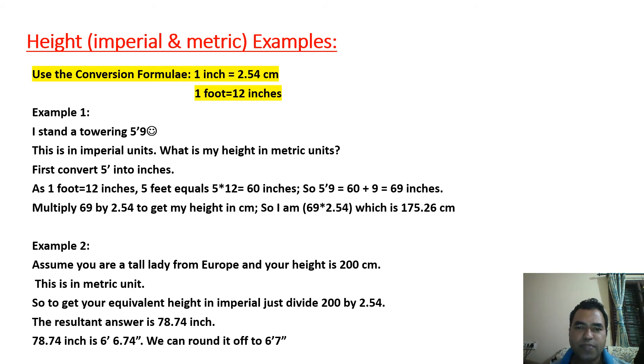Example 2. Assume you are a tall lady from Europe and your height is 200 centimeters. This is in metric units. So an American will not understand your height straight away. So you need to divide 200 by 2.54 to get your height in imperial system. So the resultant answer will be 200 divided by 2.54 which is 78.74 inches.